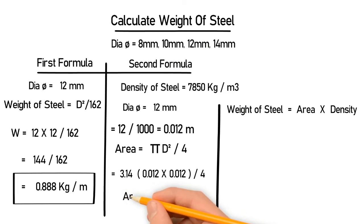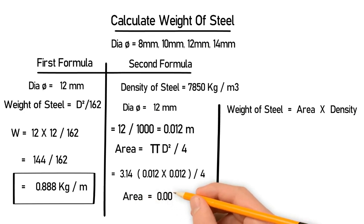This will give you the area which is equal to 0.000113 square meter. Now we have the values for density, which we already know, and the area we just calculated.